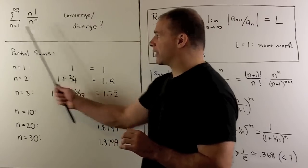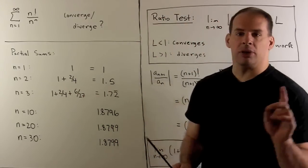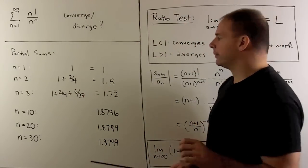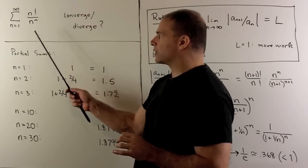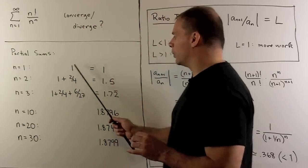Now first, we should just check things out numerically. So let's take some partial sums. For the first partial sum, I'm just going to take 1 factorial over 1 to the 1, which gives me 1.